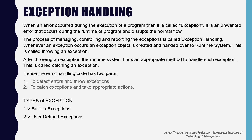The error handling code has two parts: first, to detect the errors and throw exceptions; second, to catch the exception and take appropriate actions. There are basically two types of exceptions: one is the built-in exception, and the other is the user-defined exception.